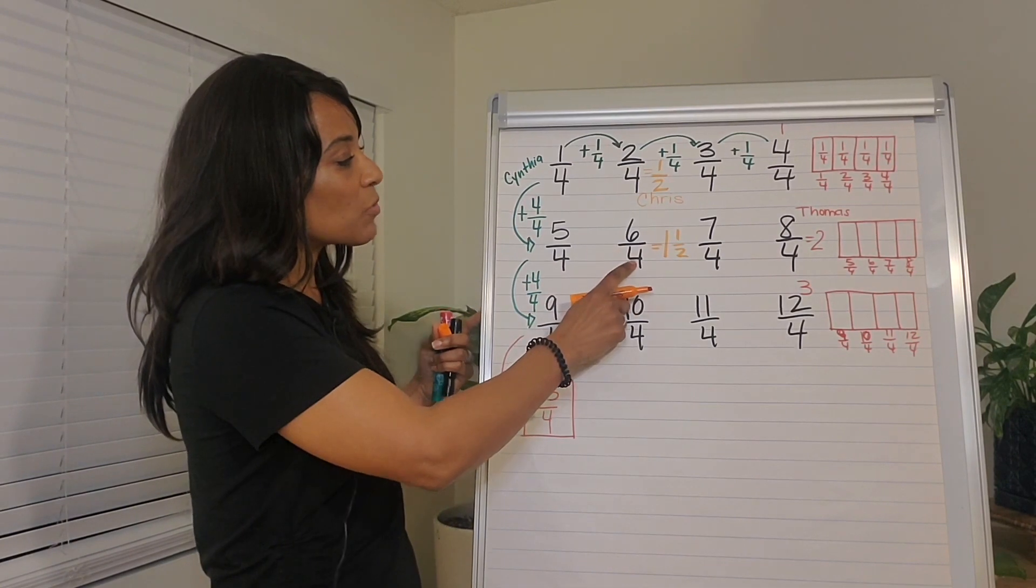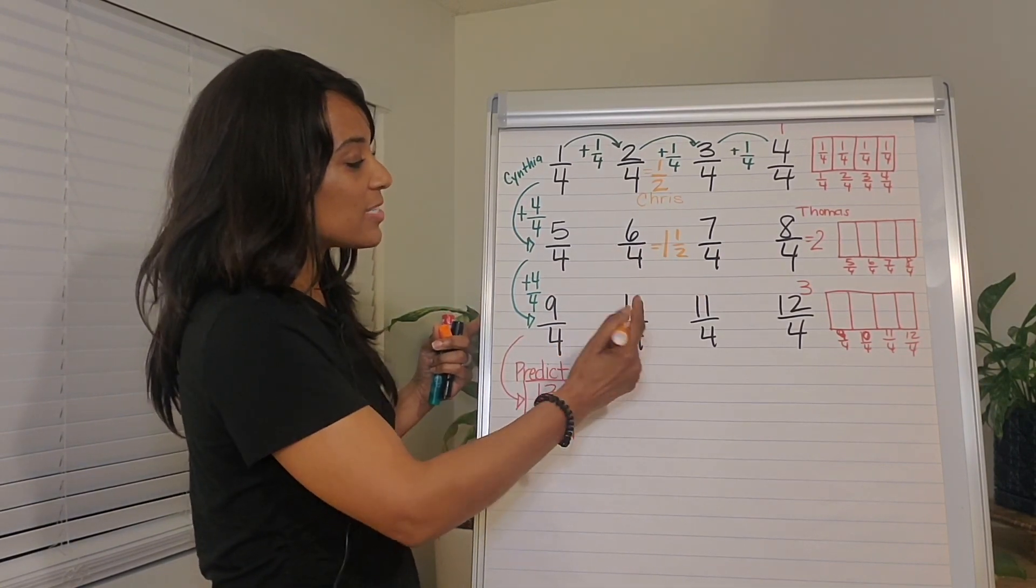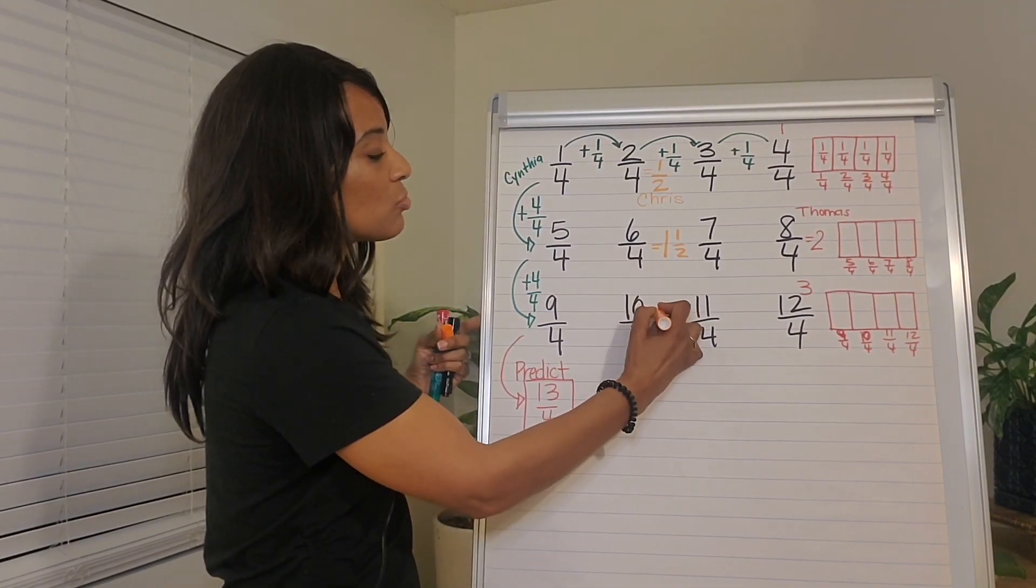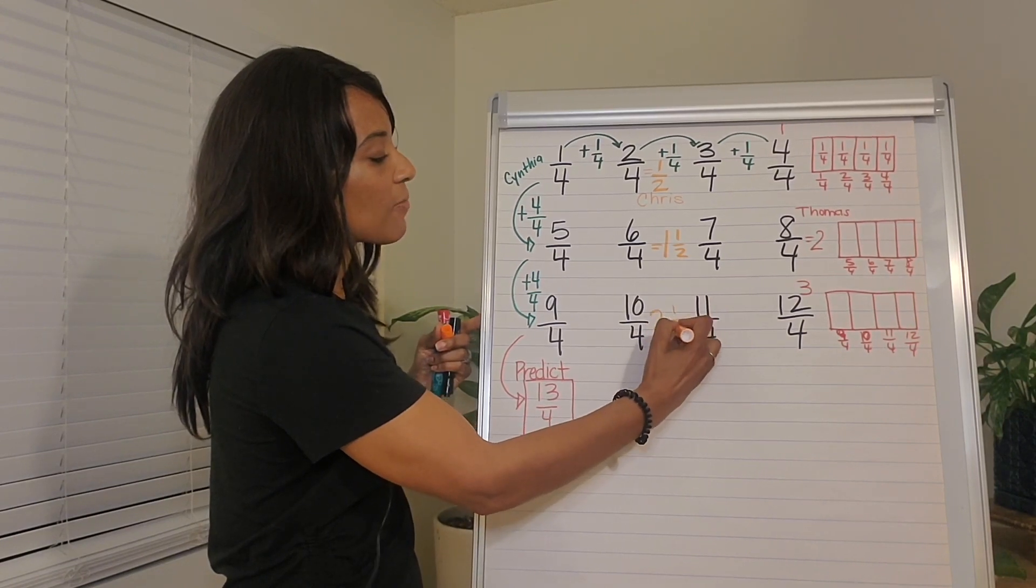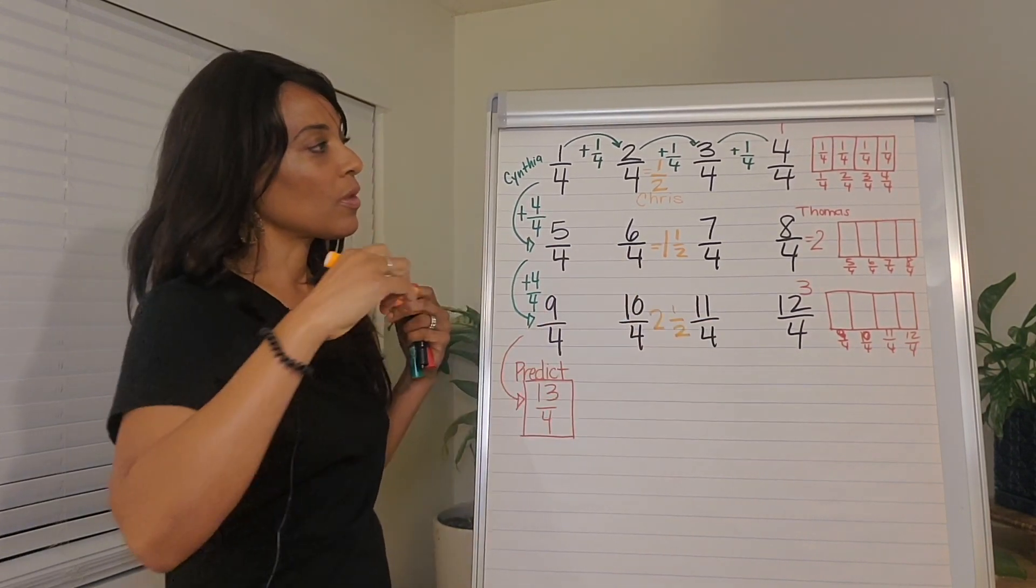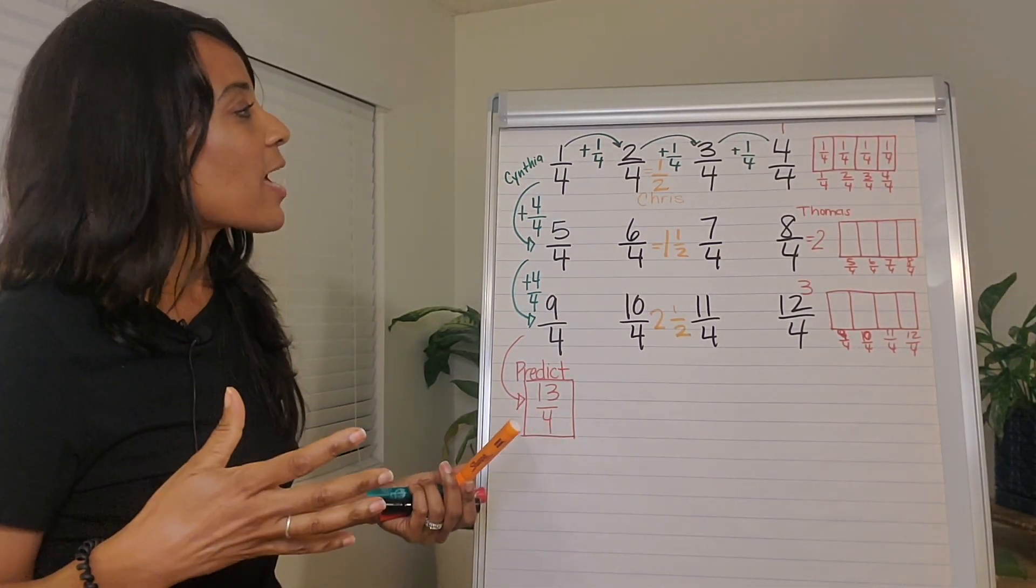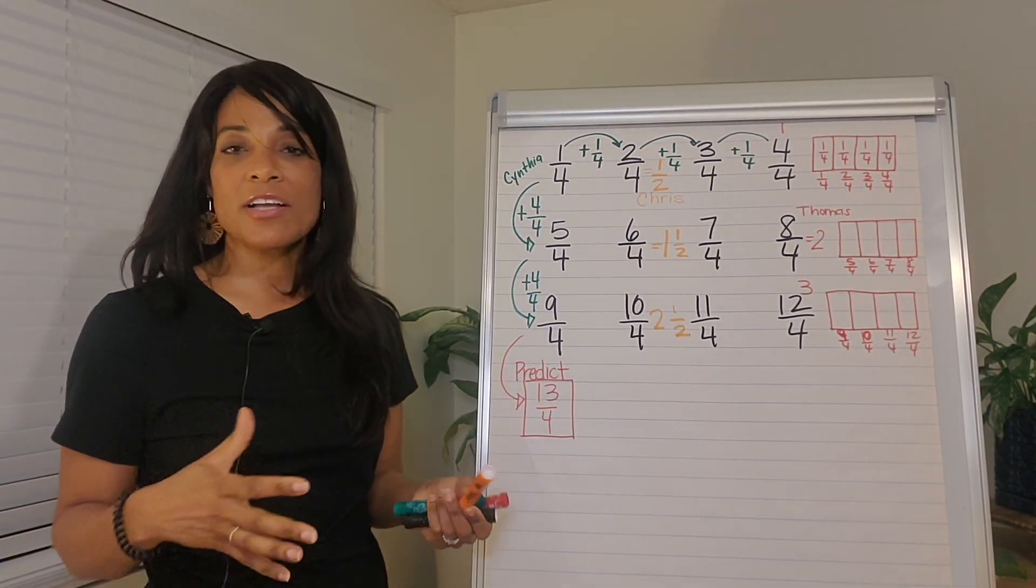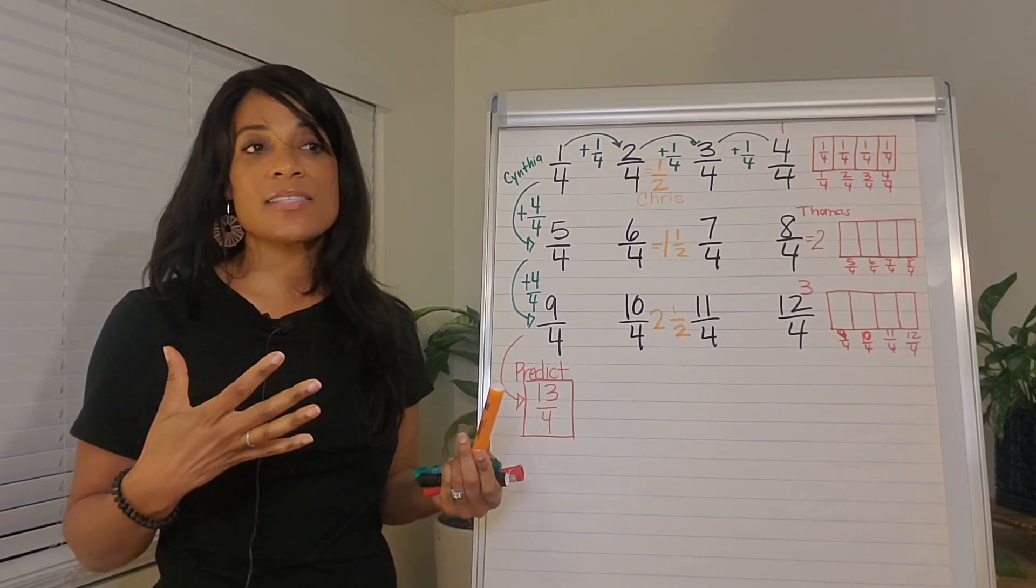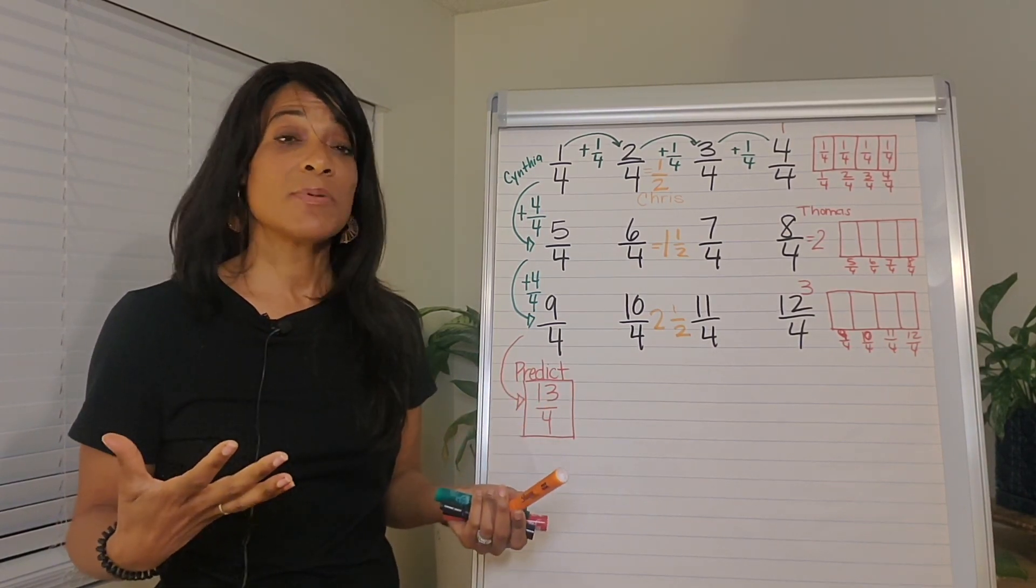And if six fourths is one and a half, then 10 fourths must be two and one half. So just by using one choral counting chart, we can tap into these ideas of equivalent fractions in a way that's easy for kids to be honest.